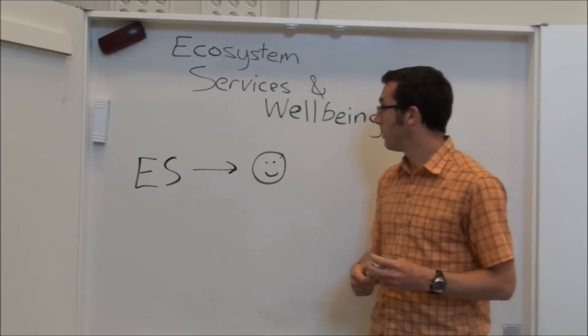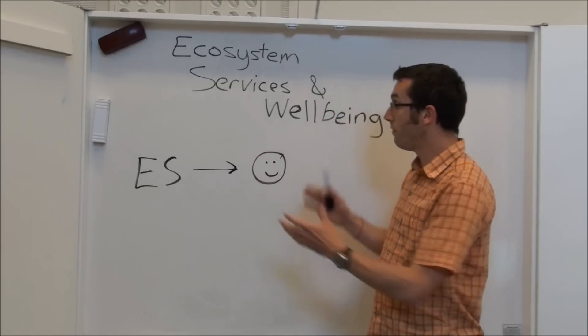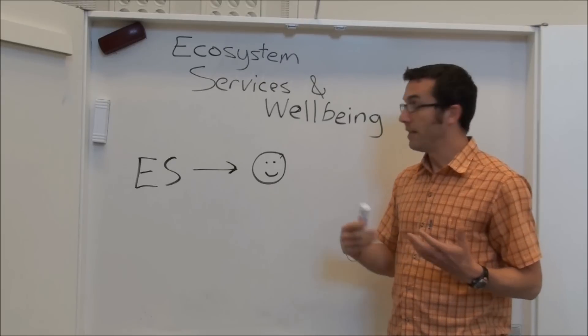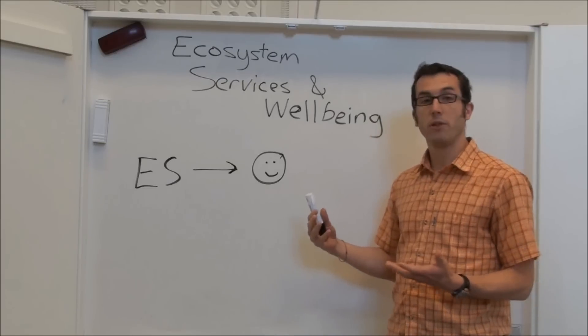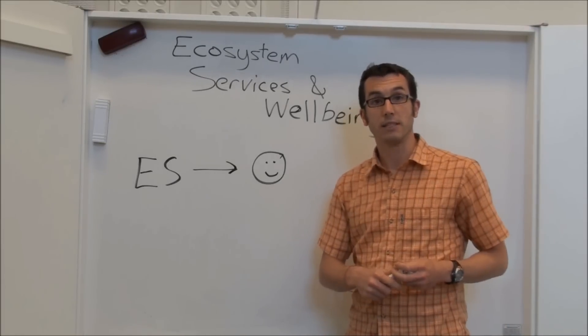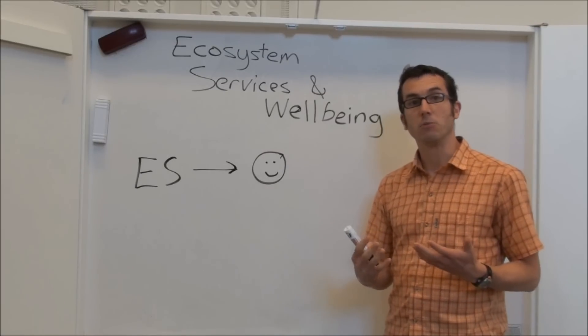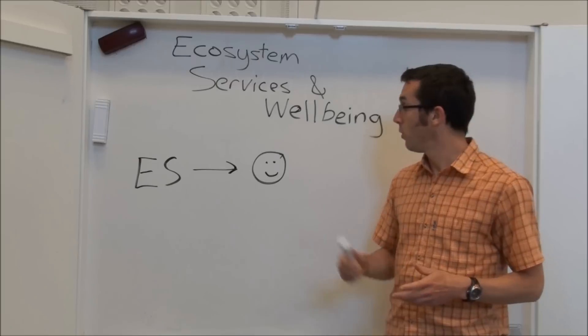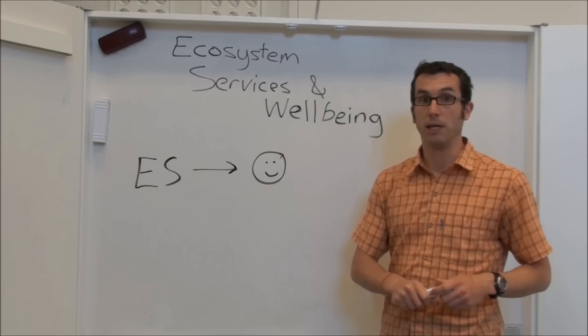What I want to talk to you about today is to try and unpack this a little bit more. Obviously at a global scale we can understand that people of the world need food and that comes from ecosystems, but of course different people in the world don't all experience the same level of wellbeing. And if we're interested in ecosystem services in the context of a poor country where poverty alleviation is really important, we need to understand more what the link is between ecosystem services and wellbeing.